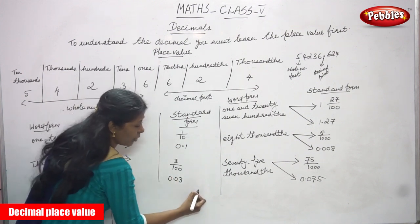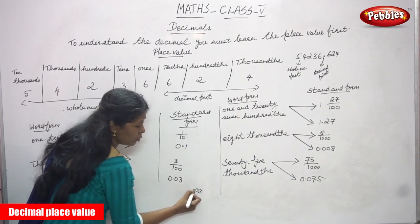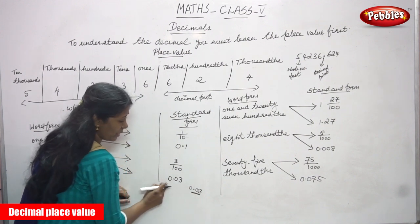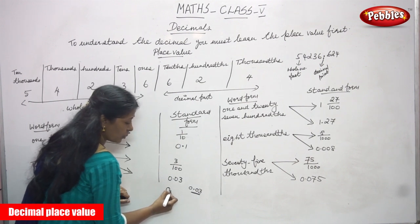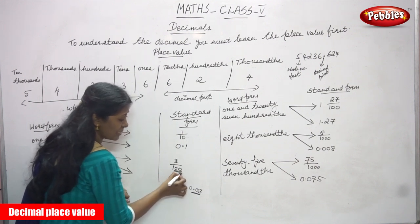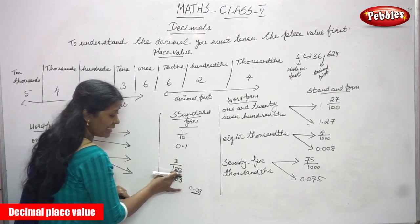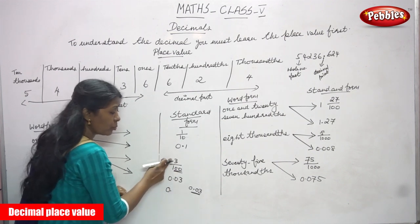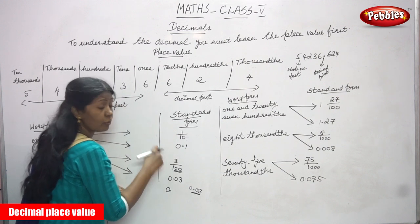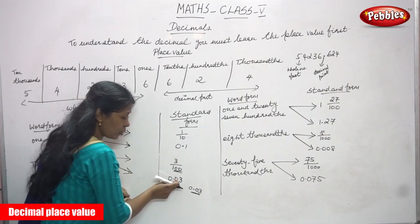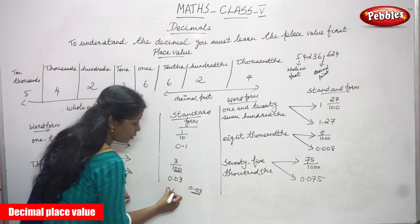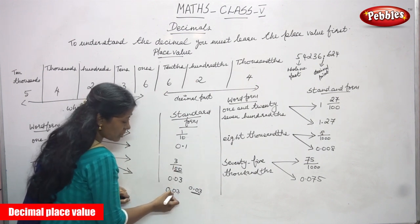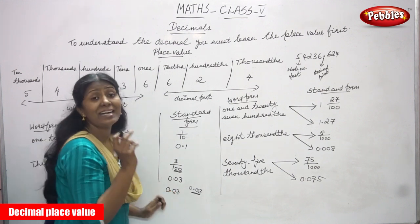Even though you can write it like this: first write zero, then put a point, then write zero three. The denominator has two zeros meaning two digits, but here only one digit in the numerator. So you need one more digit — if you don't have it, you write zero. Then write the numerator: zero three. So 0.003 — wait, 0.03 — where zero is in the tenths place and three is in the hundredths place.